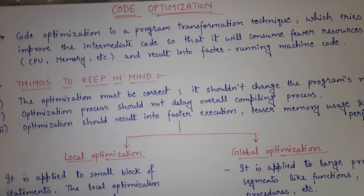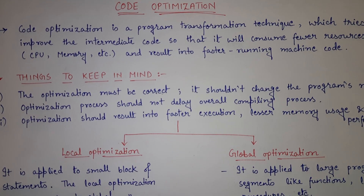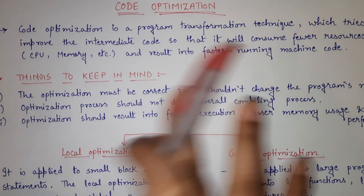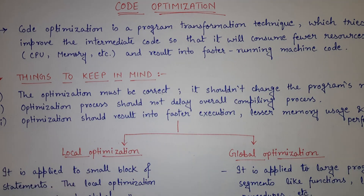In my next video, I will be explaining code optimization techniques in very detail — control flow analysis, data flow analysis, constant propagation, common sub-expression elimination — everything, with examples. For now, I hope code optimization and local and global optimization are very clear to you. In case you have any doubt, you can ask in the comment section. If you found the video helpful, please share it with your friends and classmates. Thank you so much.